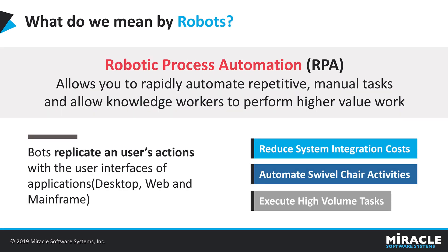RPA technology is sometimes called a software robot or a bot, which mimics human work. With RPA, we can automate desktop, web, and Citrix environments. It logs into applications, enters data, calculates and completes the task, and then logs out without human interaction.